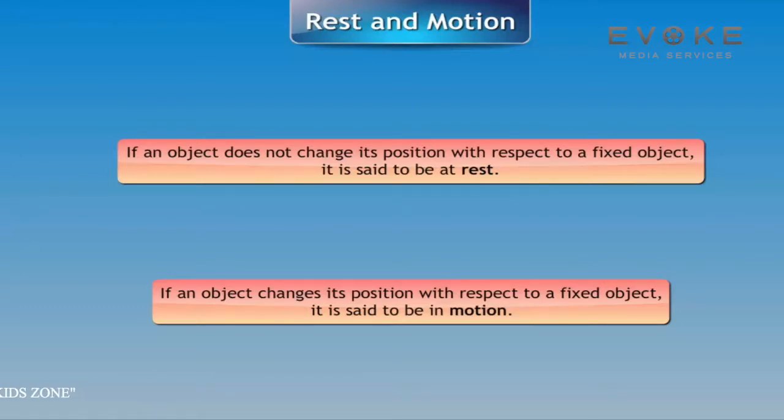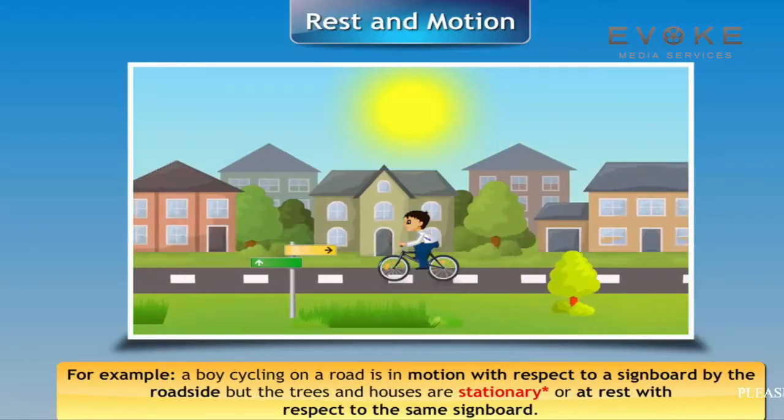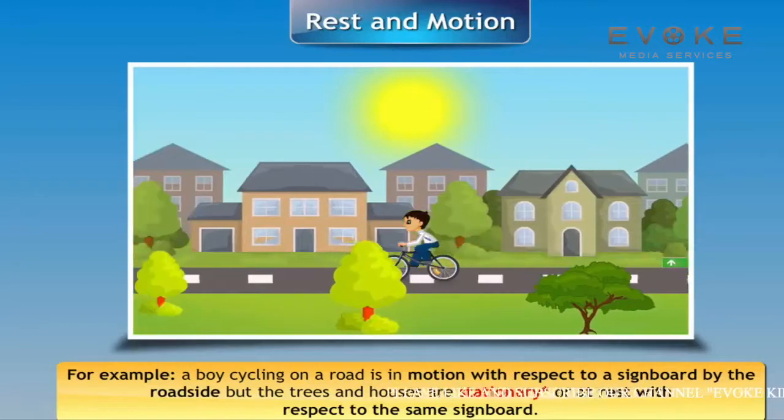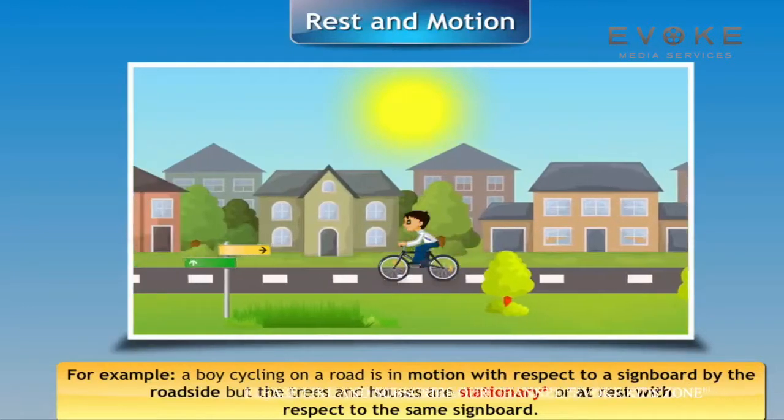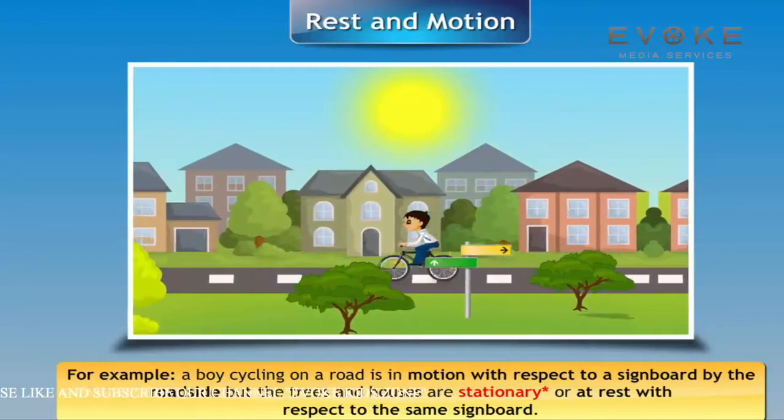For example, a boy cycling on a road is in motion with respect to a signboard by the roadside, but the trees and houses are stationary or at rest with respect to the same signboard.